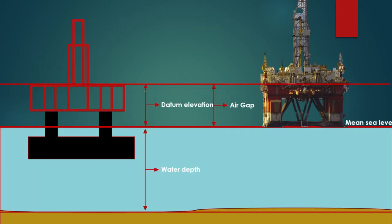Now if we move to offshore — here is the offshore platform shown in a schematic alongside a real platform image. In offshore, we deal with different elevations. The first one is water depth: the distance from the seabed under the water to the surface of the water, which is Mean Sea Level.